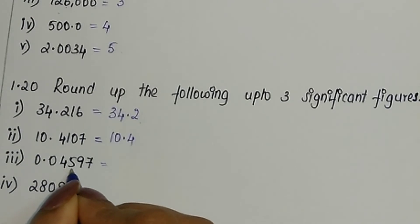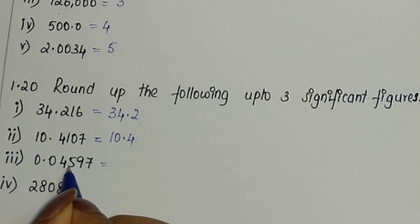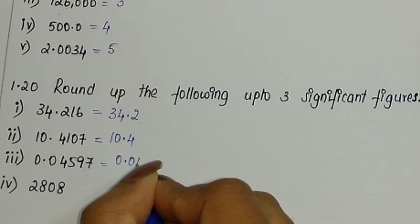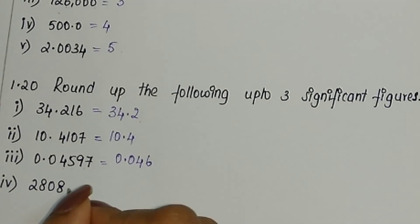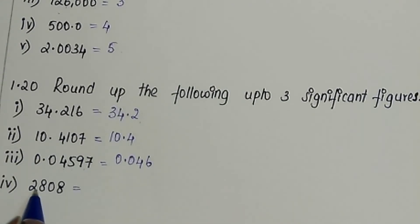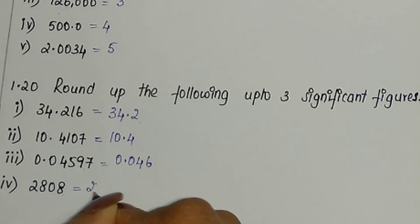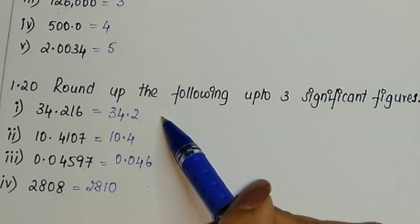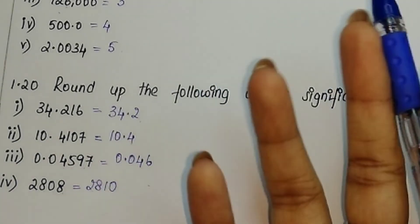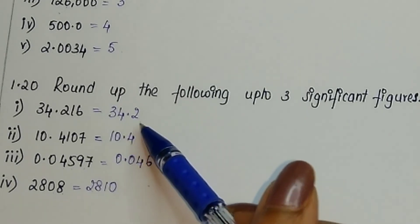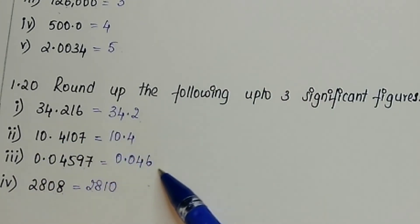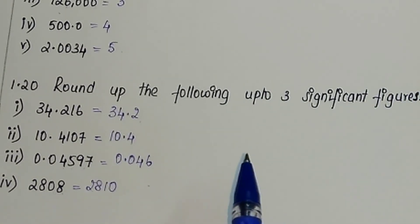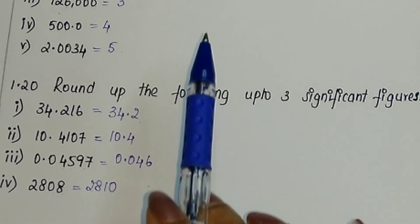The third number is 0.0459. After 4 we have 5 and 9, so we round up to get 0.046. The last number is 2808, which rounds off to 2810. We round off values depending on whether the digit is greater than or less than 5. These concepts — significant figures and scientific notation — are applied when doing numericals where values can be very large and need to be rounded. I hope this video was helpful.